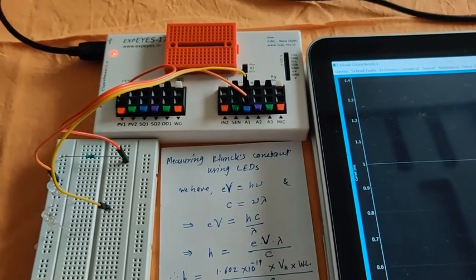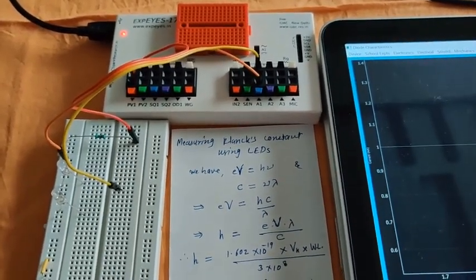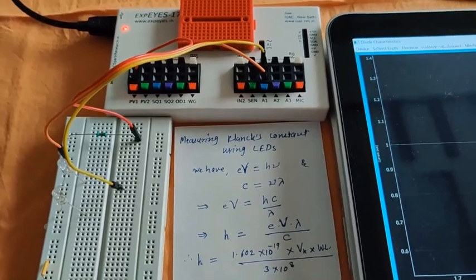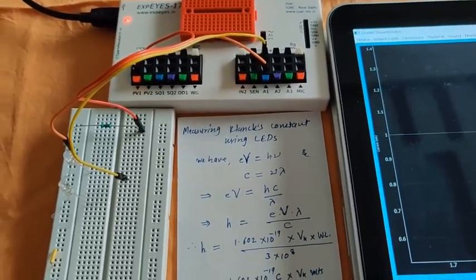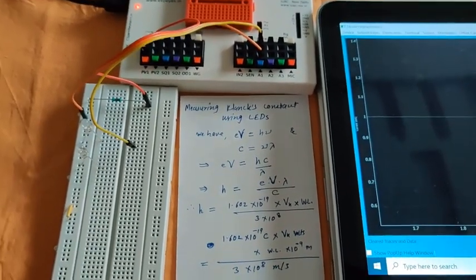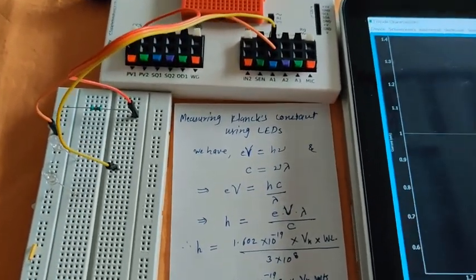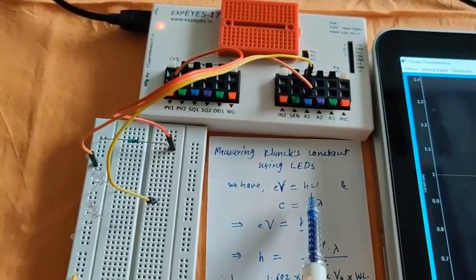Students, now we'll go for another experiment: determination of Planck's constant using colored LEDs. Before going to the experimental part, I should describe a bit of theoretical knowledge. As we know, E·V equals h·ν.